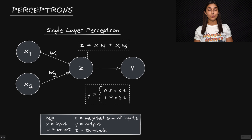A perceptron, also referred to as a single layer perceptron, is an algorithm that accepts an input and maps it to a binary output by the use of parameters called weights.